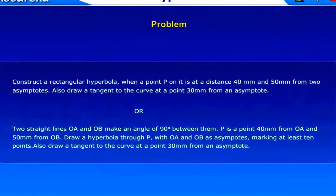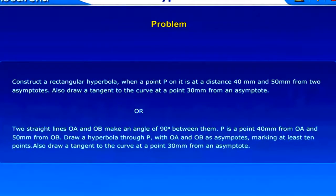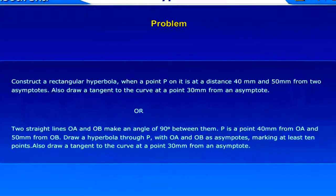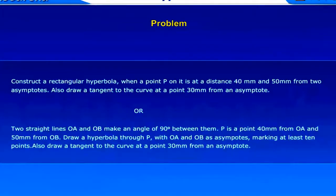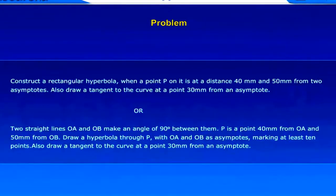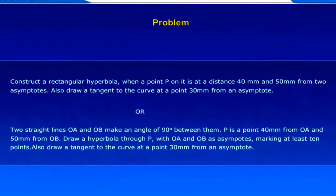Or: Two straight lines OA and OB make an angle of 90 degrees between them. P is a point 40mm from OA and 50mm from OB. Draw a hyperbola through P with OA and OB as asymptotes, marking at least 10 points. Also draw a tangent to the curve at a point 30mm from an asymptote.